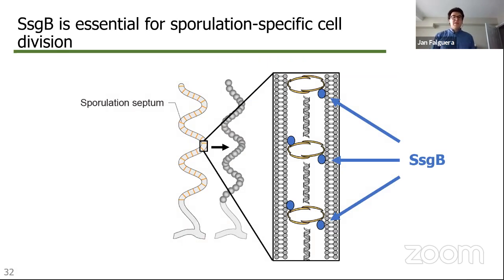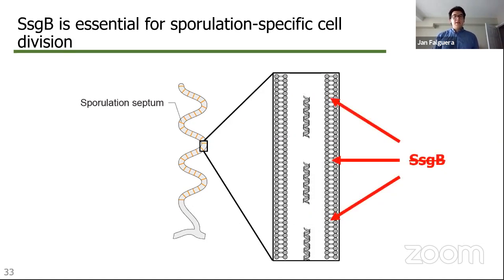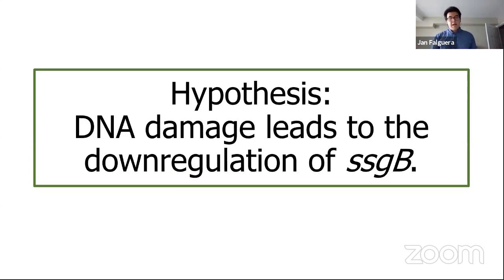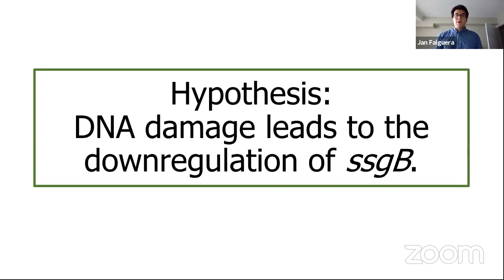But what is SSGB? SSGB is a Streptomyces-specific cell division protein that is essential for the completion of the sporulation pathway in Streptomyces. If you delete the gene for SSGB, you obtain a mutant which is genetically incapable of undergoing sporulation. So with the knowledge that DNA damage affects SSGB expression from the RNA-seq, combined with the observation that DNA damage blocks spore formation, and that an SSGB null mutant does not sporulate, we formed the hypothesis that DNA damage leads to the downregulation of SSGB as a response in Streptomyces.